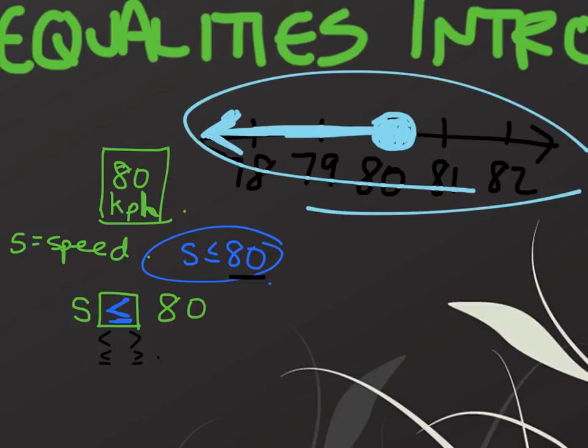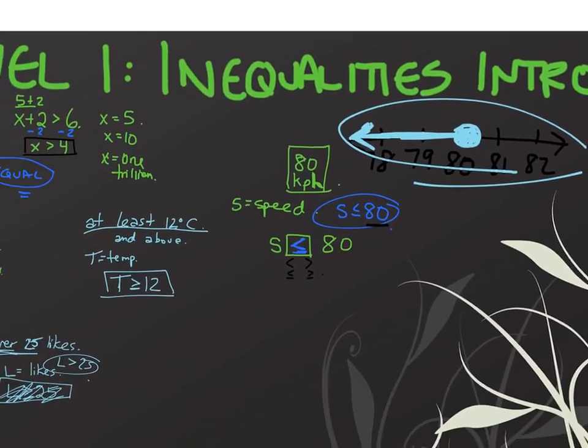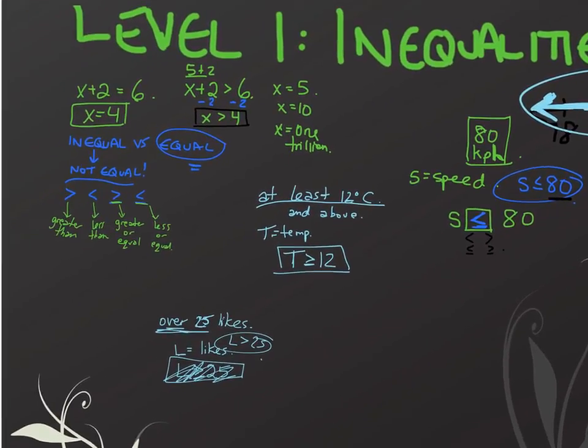What this says is our solution can be 80 or anything less than it. Let's go take a look at another one of our examples.